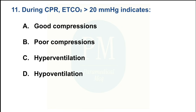During CPR, ETCO2 greater than 20 mmHg indicates: Option A — good compressions; Option B — poor compressions; Option C — hyperventilation; Option D — hypoventilation. The correct option is Option A: good compressions.